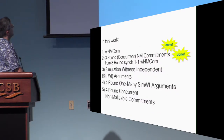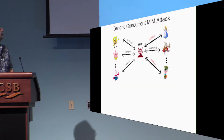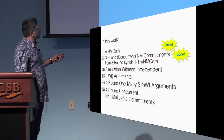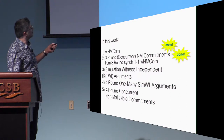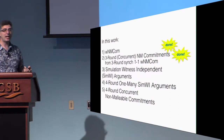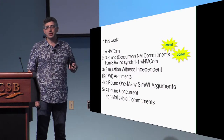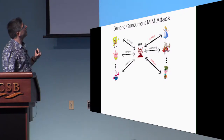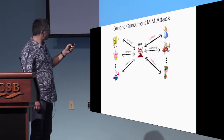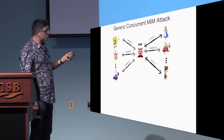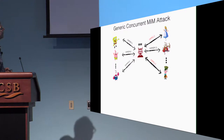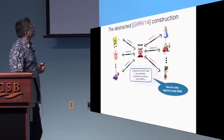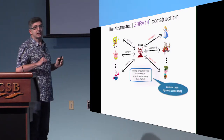Now we're going towards step three: the final goal of showing concurrent non-malleable commitments. Why am I going to talk about argument systems? I'll introduce the reason we needed a new non-malleability flavor for argument systems. This is a generic man-in-the-middle attack where there are multiple senders, multiple receivers, and the man-in-the-middle can commit to bogus messages or to well-formed messages.